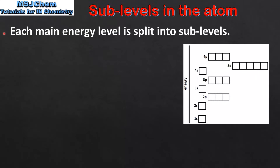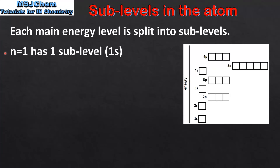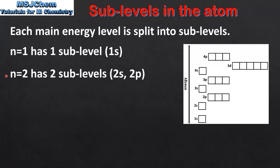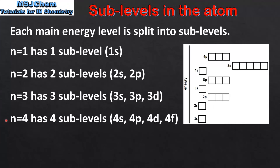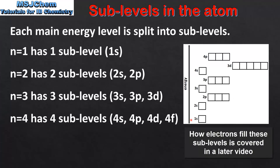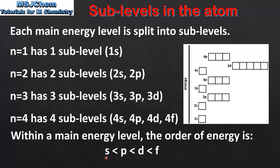Next we look at sublevels. Each main energy level is split into sublevels. N equals 1 has 1 sublevel: the 1s sublevel. N equals 2 has 2 sublevels: the 2s and 2p sublevels. N equals 3 has 3 sublevels: the 3s, 3p, and 3d sublevels. N equals 4 has 4 sublevels: the 4s, 4p, 4d, and 4f. On the right we can see these sublevels arranged in order of energy. The 1s sublevel has the lowest energy, and energy increases with distance from the nucleus. Within a main energy level, the order of energy of the sublevels is s, p, d, f, with s having the lowest energy and f having the highest.